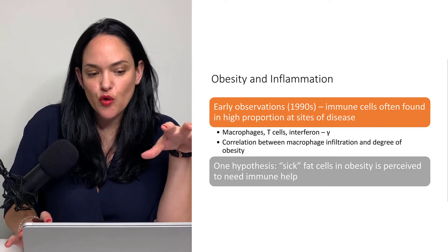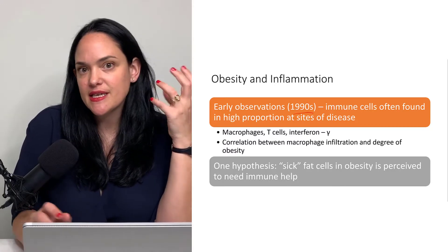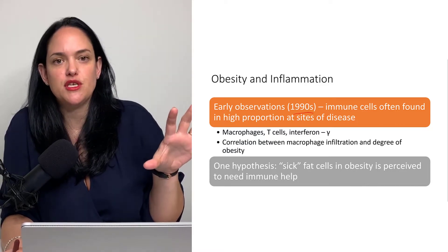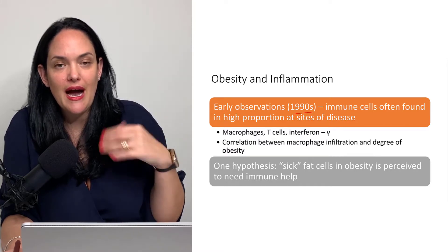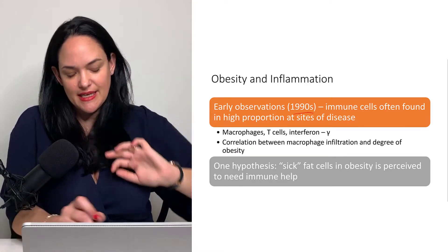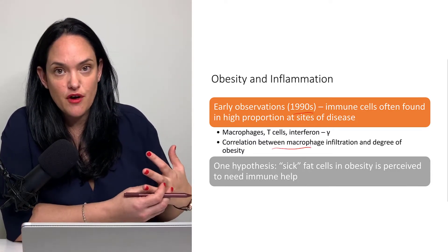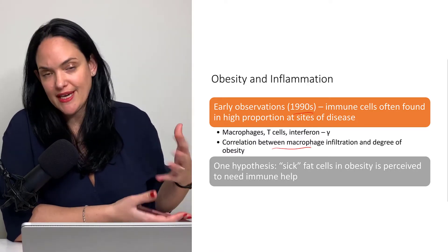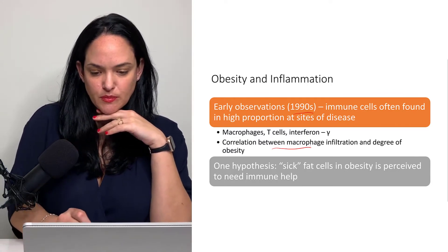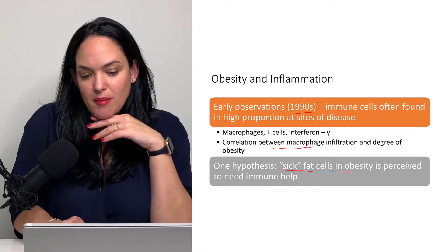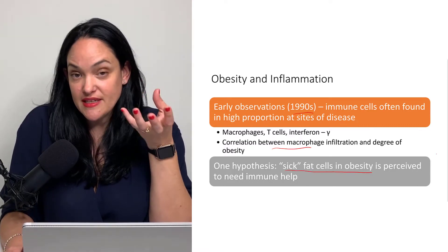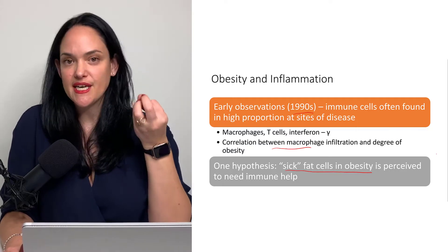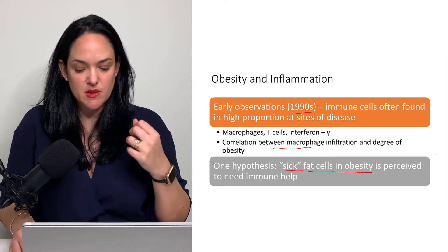This has been known for some time. Earlier observations in the 90s were pretty basic — just noting that there are a lot of immune cells in WAT, white adipose tissue, in individuals with higher levels of adiposity. There was a correlation between the amount of macrophages in particular that are present in obese WAT compared to leaner individuals or mice. One hypothesis that dominated at the time is that the body senses that fat cells are too large, and that these enlarging fat cells need extra help, which is why the immune system is being recruited.